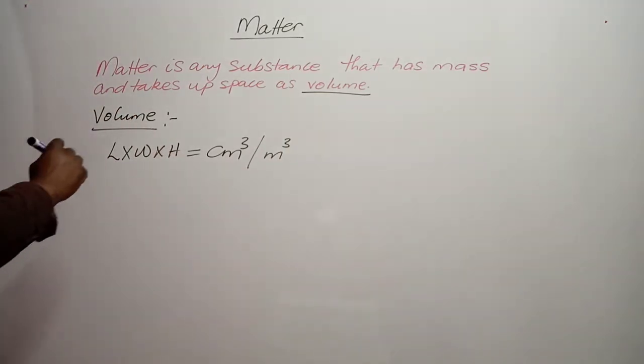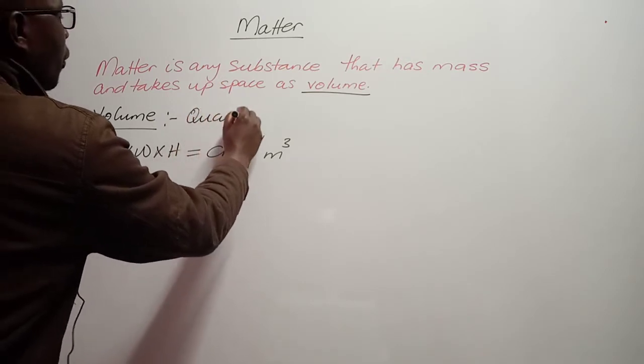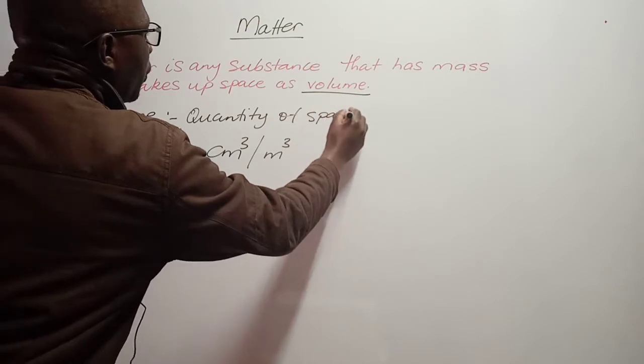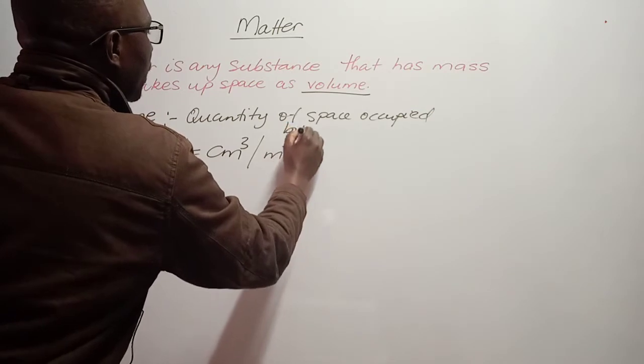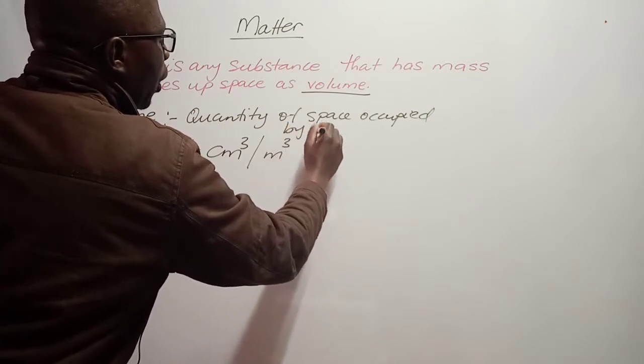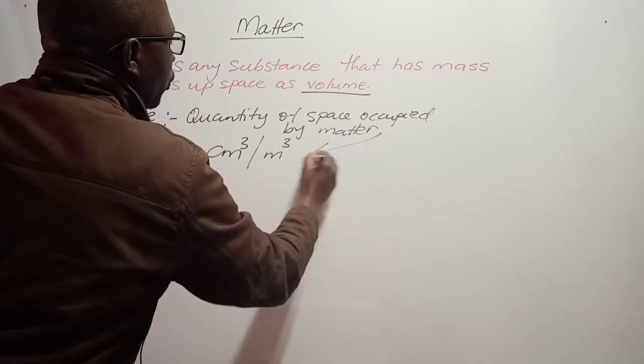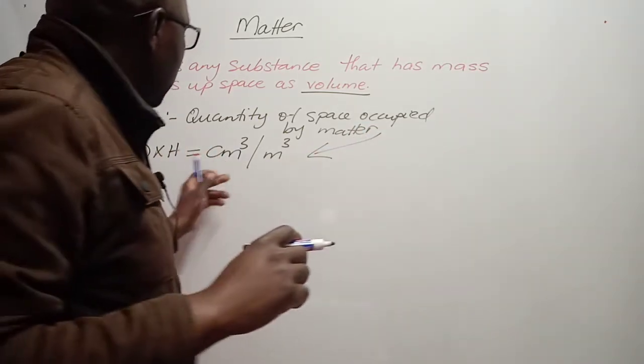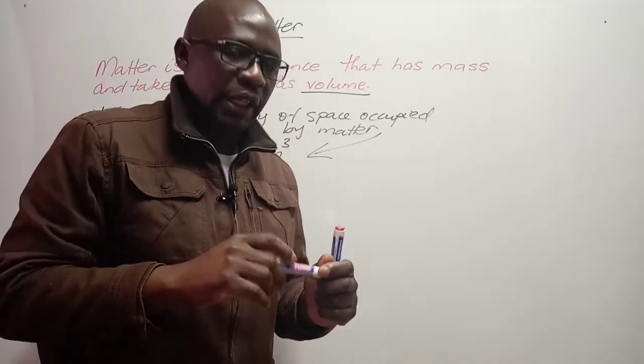We say volume is the quantity of space occupied by matter. The quantity of space occupied by matter is volume, and it is three-dimensional. Hence, its unit of measurement being cubic meters or cubic centimeters.